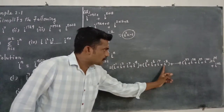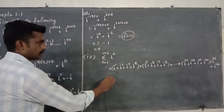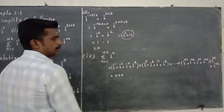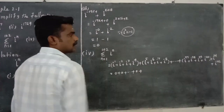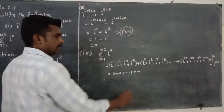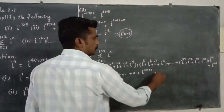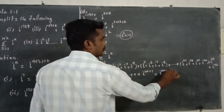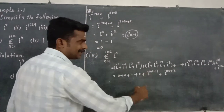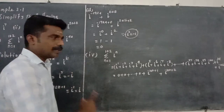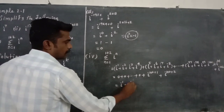Each group of four consecutive powers of the imaginary unit sums to zero. So we get zero plus zero plus zero, for all 25 groups, plus i power 101 plus i power 102. The remaining terms give i plus i squared equals i plus (negative 1), which gives a final answer.